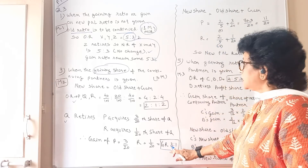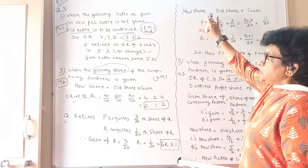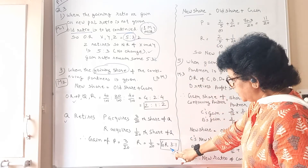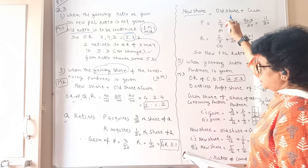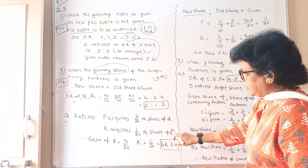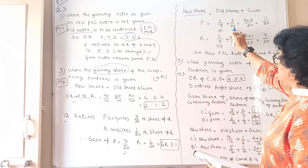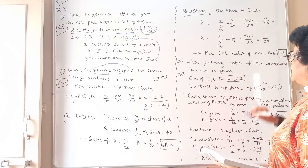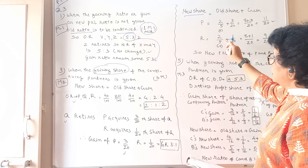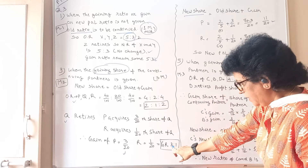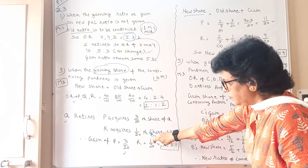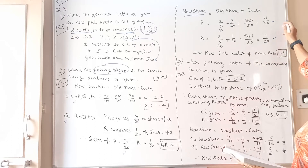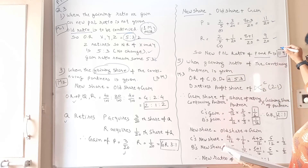The first step is to calculate in which proportion they have received the gain. Now for new share, the formula is: old share plus gain. Old share of P is 2/5. So 2/5 plus 3/20 — make the LCM, multiply by 4 — gives 8+3 over 20, which is 11/20. For R: old share 2/5 plus gain 1/20. Make denominator 20: that gives 9/20. So the new P&L ratio of P and R is 11:9.